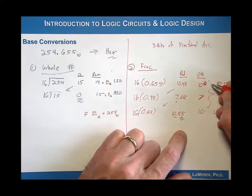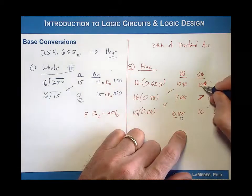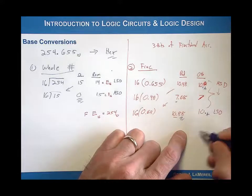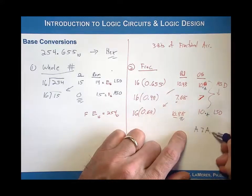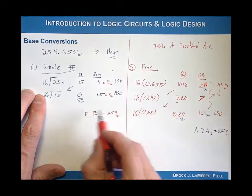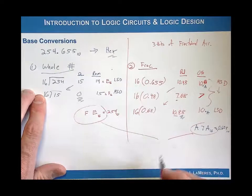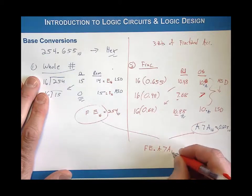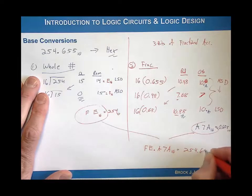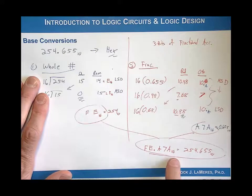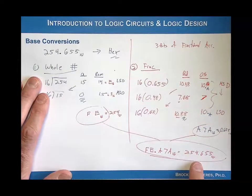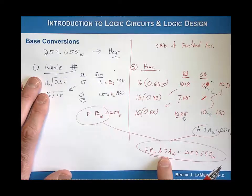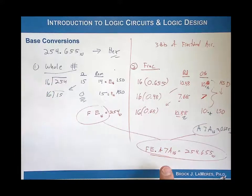I convert these to their hex symbols: recall that 10 equals A, 7 is just 7, and 10 equals A. So I write the fractional part as A7A base 16, which equals 0.655 base 10. Finally, combining the two numbers, the complete conversion is FE.A7A base 16, which equals 254.655 base 10. Notice there is an accuracy issue — it's not exactly equal to 254.655 base 10 because we stopped at three digits of accuracy, but that's okay — that's how we specified the conversion. That is how you convert from decimal into any other base.